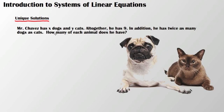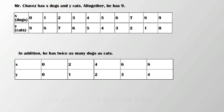It doesn't seem like there's a lot of information there, but really, if you break it down piece by piece, there's quite a bit. The first thing I'm going to do is start with that first statement: Mr. Chavez has x dogs and y cats, and altogether he has nine. So, the first thing I did was create a table of all the dogs I could have from zero to nine, and the pairings of cats I could have with those dogs — you'll notice they all add up to nine.